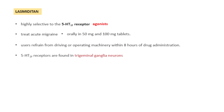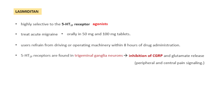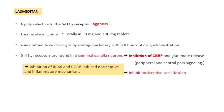The mechanism is: since 5HT1F receptors are found in the trigeminal ganglion neurons, stimulation of these receptors will inhibit the release of CGRP — that is, calcitonin gene-related peptide — as well as glutamate. Predominantly it blocks CGRP release, which is responsible for neurogenic inflammation and the headache. So basically it inhibits CGRP both peripherally and centrally, thereby inhibiting peripheral and central pain signaling and nociceptive sensitization.